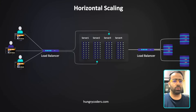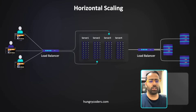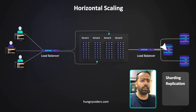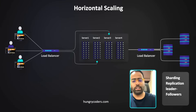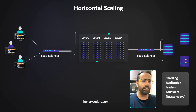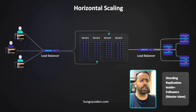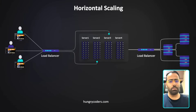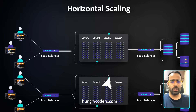When doing horizontal scaling on databases, concepts like database sharding and replication come into picture. For example, with three databases, one can be the leader (master) and others are followers (slaves). All write operations happen on the master, then data is replicated to followers — either synchronously or asynchronously. A separate video will cover sharding and replication in depth.